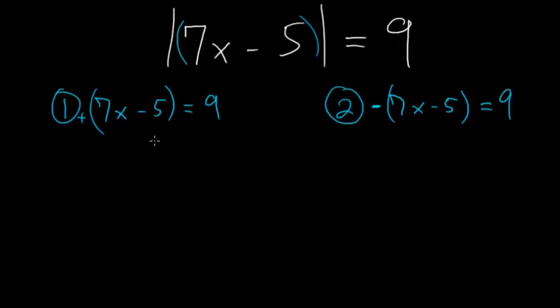And on the left one, we can add 5 to each side so that we have 7x is equal to 14. And then dividing each side by 7, we have that x is equal to 2.